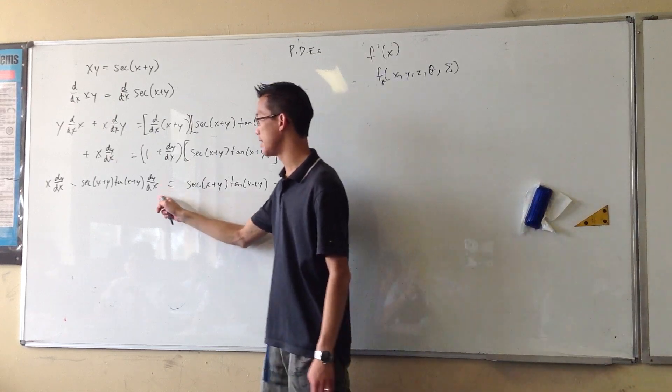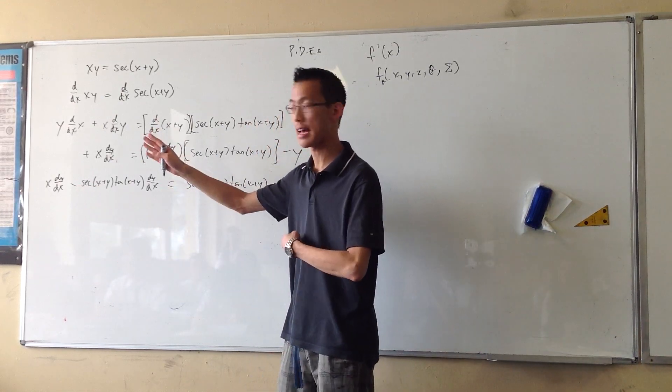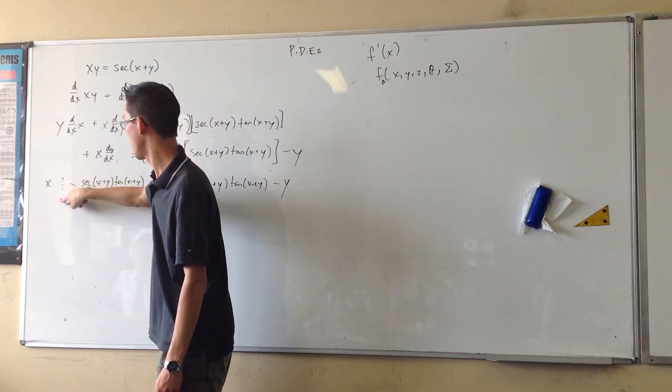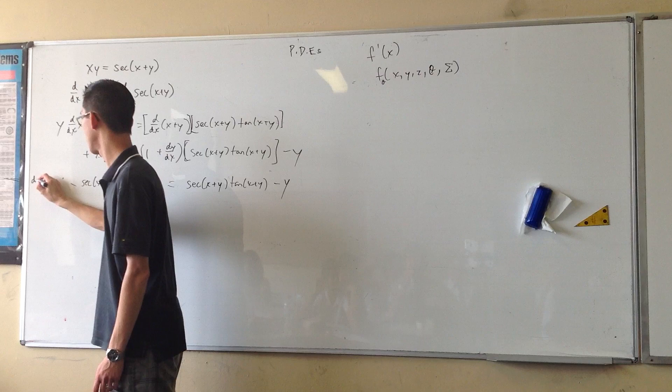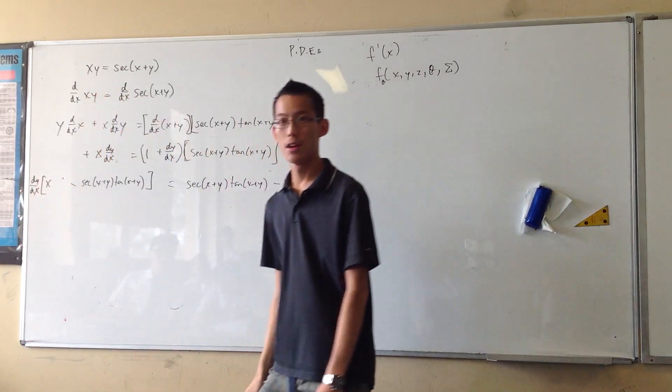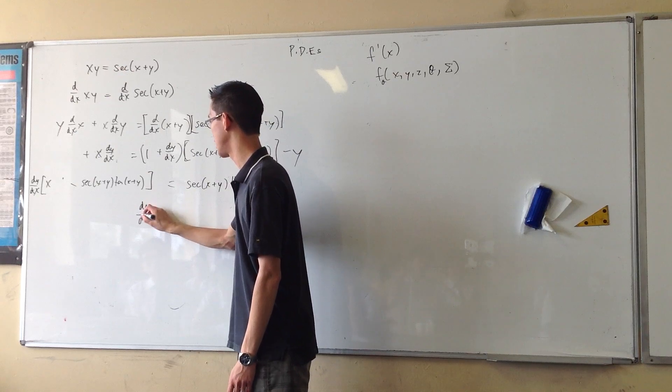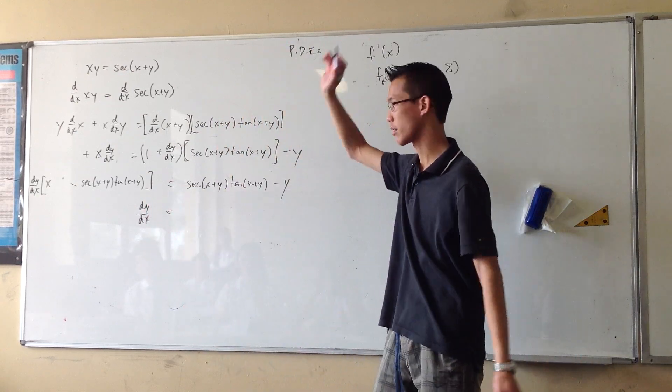So, now if I want dy/dx on its own, I factorize it out. So, let me do that here and be a bit cheap. dy/dx there, dy/dx there, factorize. So, now when I want it on its own, dy/dx, just divide through.